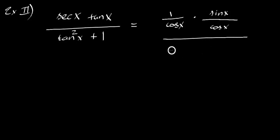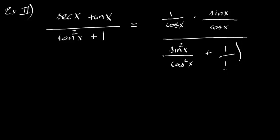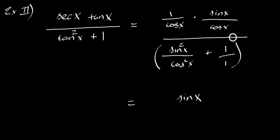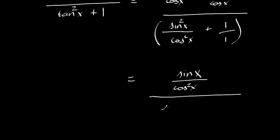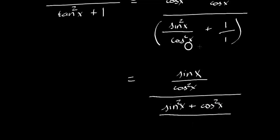Tangent²x, as we know it, is sin²x over cos²x, plus one. Since this is a fraction, I'll just put it over one. Let's completely simplify: one times sine x is just sine x over cos²x. We just need to multiply by cos²x so we can have the same denominators, and we'll be left with (sin²x + cos²x) over cos²x.